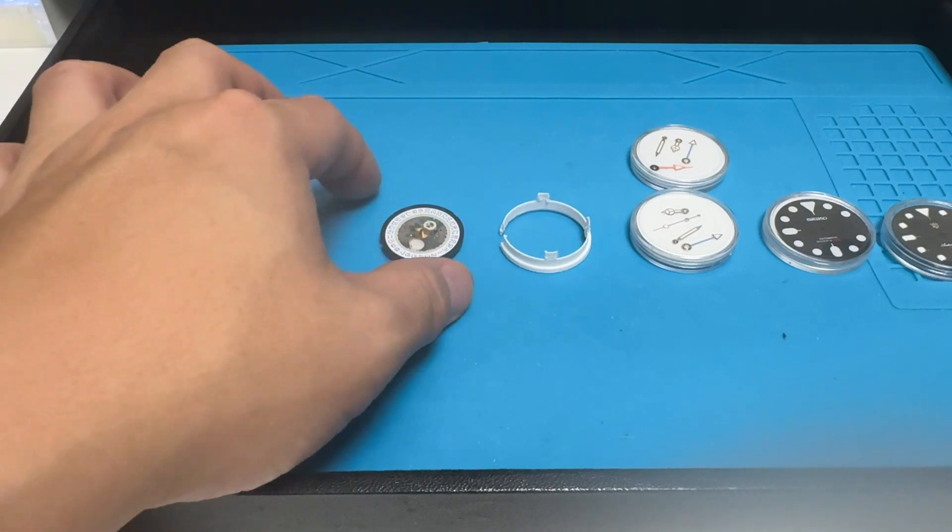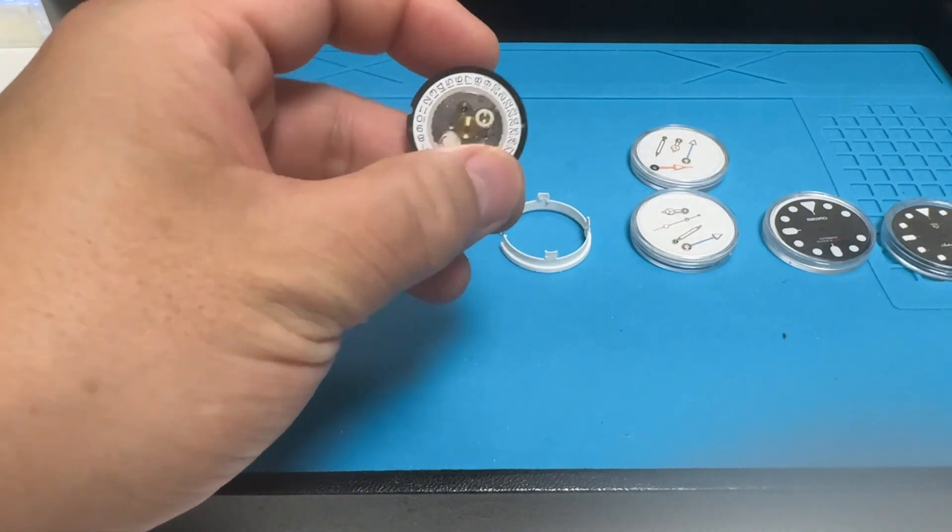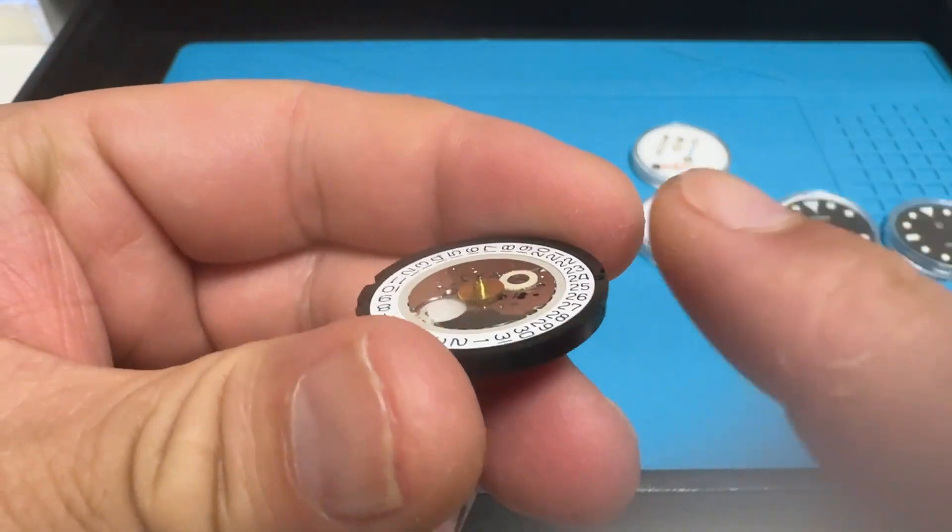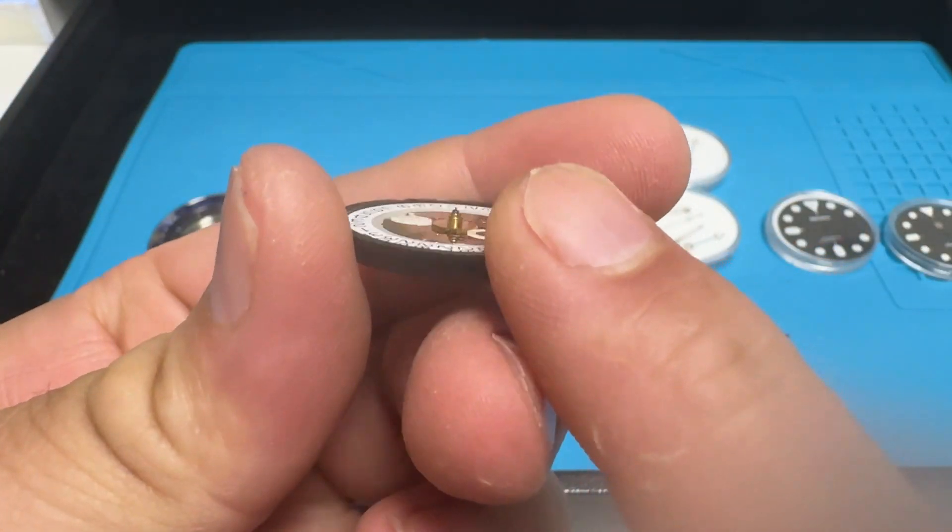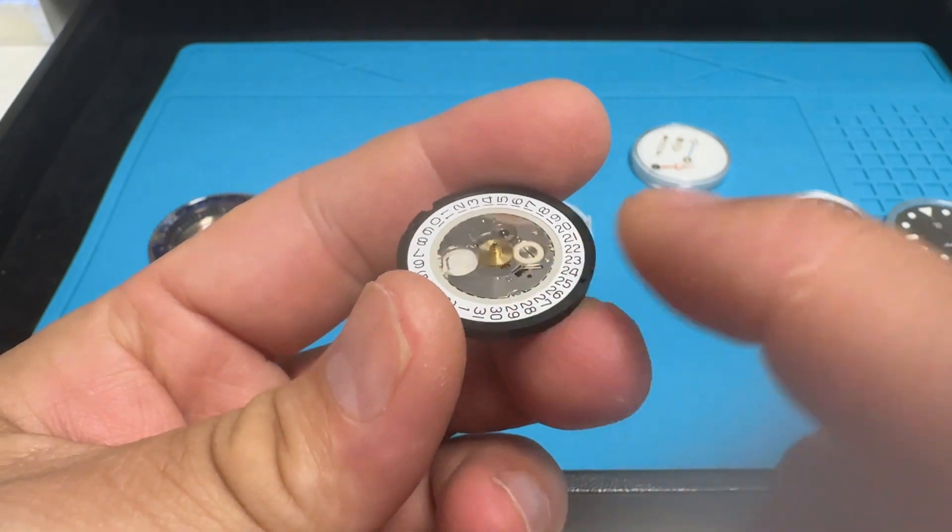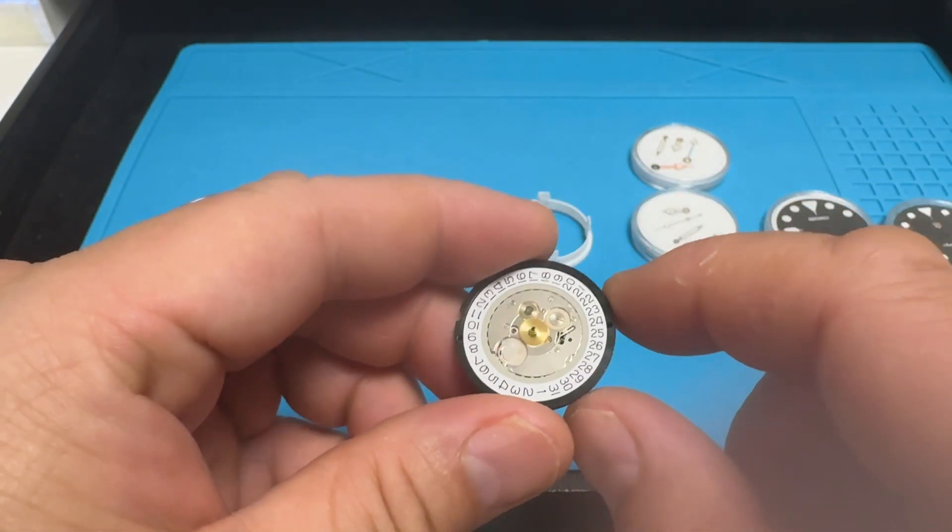Next we have the movement, the Ronda 515.24. You can see right in the center there's this gear here that's for the extra 24-hour hand. Typically a normal one won't have it.